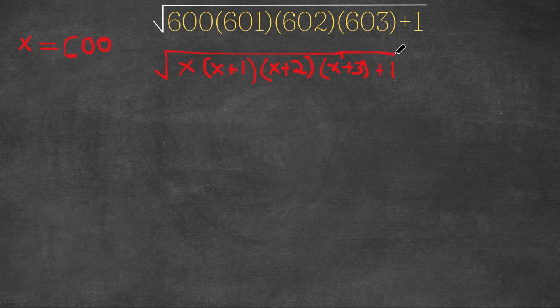Alright, so now what we're going to do is multiply x plus 1 with x plus 2. So if we multiply these two, we would get x squared plus 3x plus 2. So this is what we get if we multiply these two.